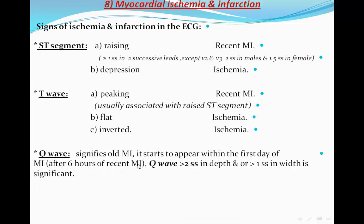The Q wave starts to appear within the first day of MI, on average around six hours. For a Q wave to be pathological or significant, it must be more than two small squares in depth (voltage) or more than one small square in width.